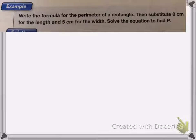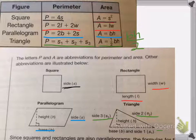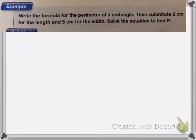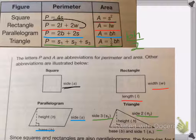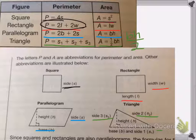So here it asks us to write the formula for the perimeter of a rectangle and then substitute 8 centimeters for the length and 5 centimeters for the width and then solve the equation. So going back, the perimeter of a rectangle is 2L plus 2W.